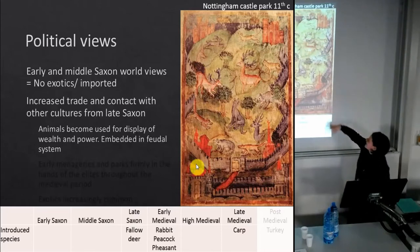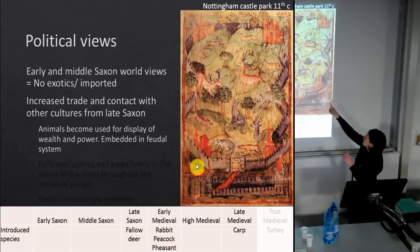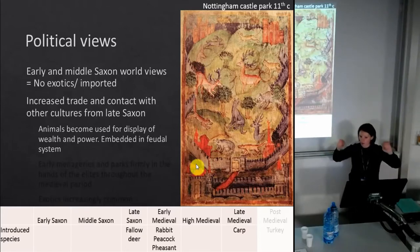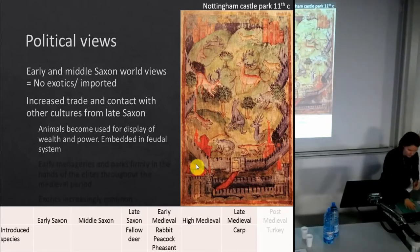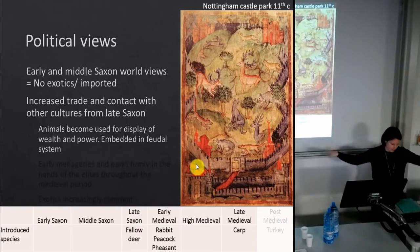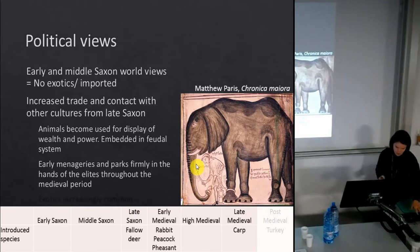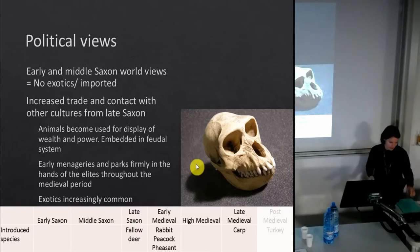Here we have an 11th-century drawing of Nottingham Castle: the castle at the top, a big wall around the edges, and inside are deer, wild boar, rabbits, and hounds. That big wall symbolizes the distance between those who don't have it on the outside and those who do on the inside. Animals are used for the display of wealth and power, embodied in the feudal system. We get early menageries and parks remaining in the hands of the elite, and any exotic taxa tend to appear only at very high-status sites — for example, a Barbary ape was found in high medieval Southampton.